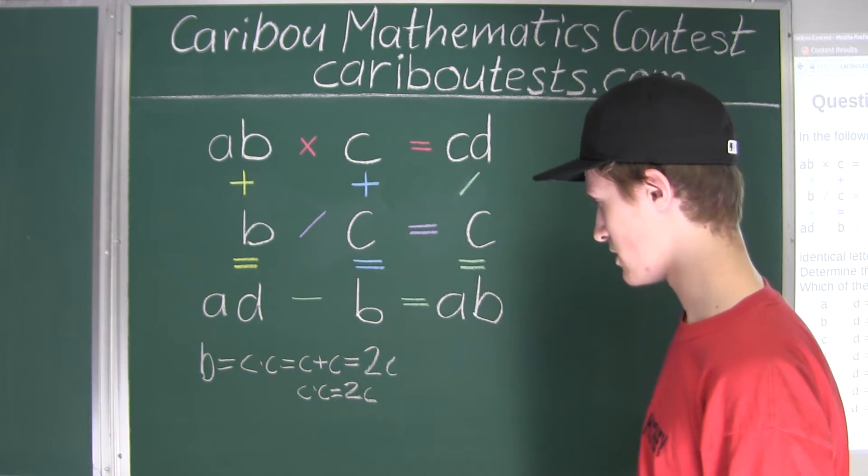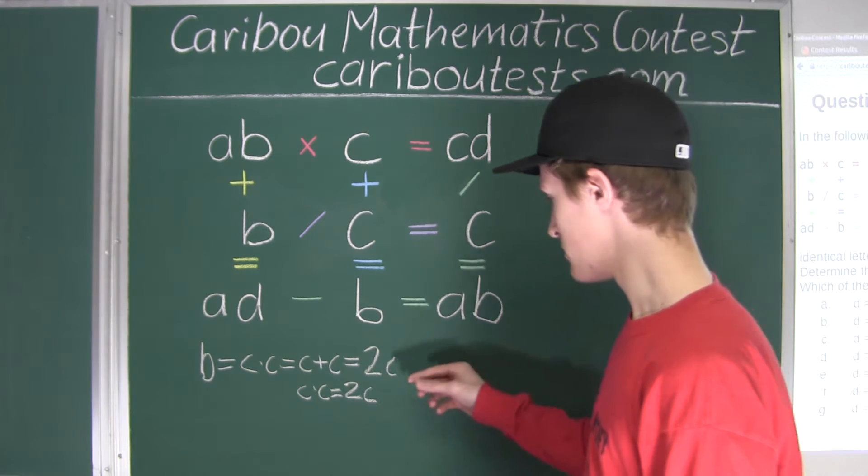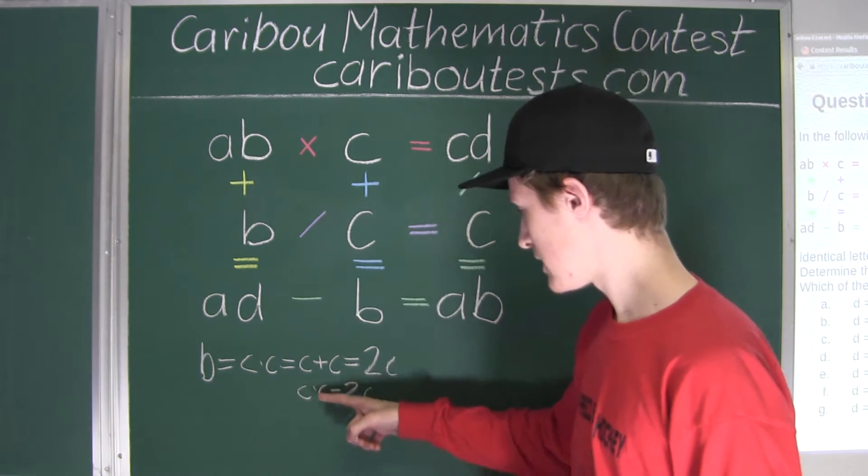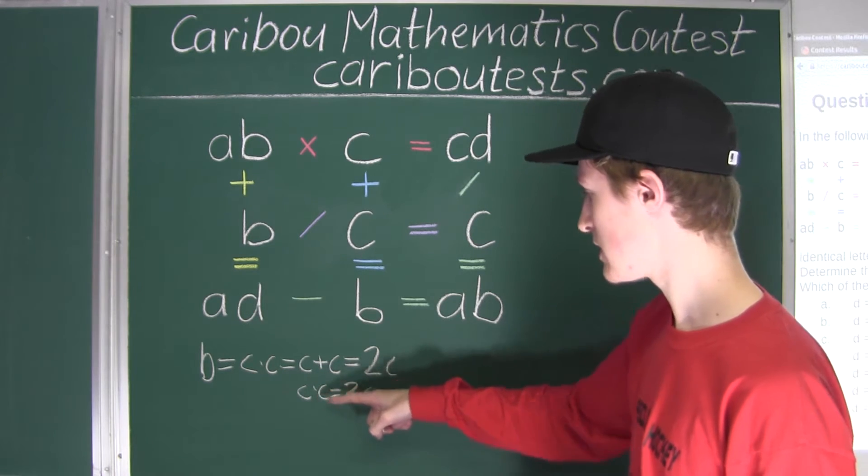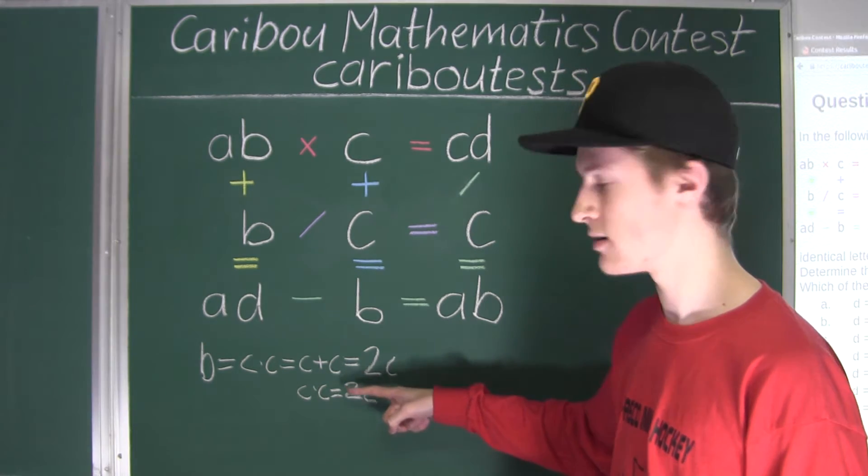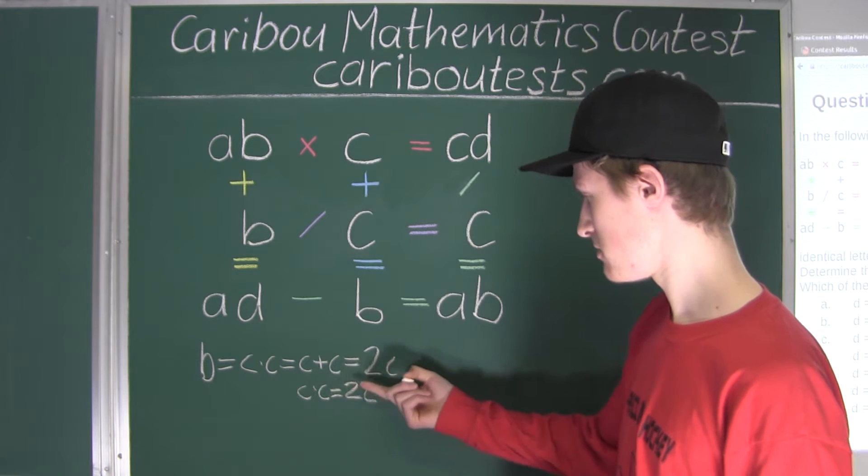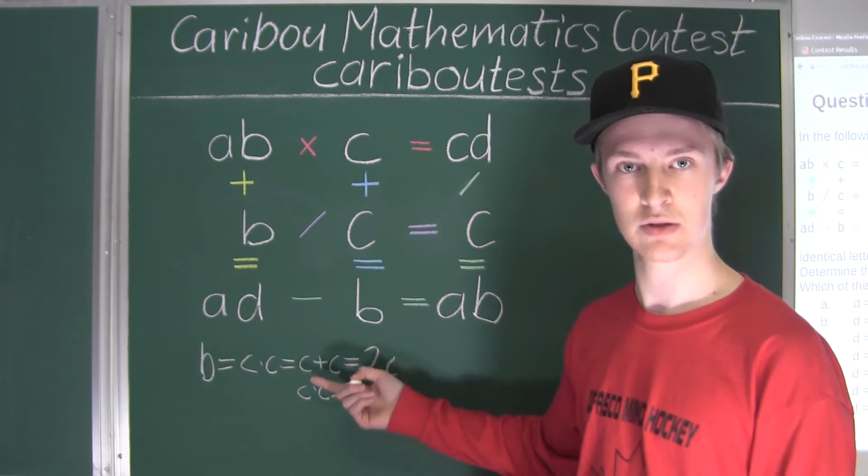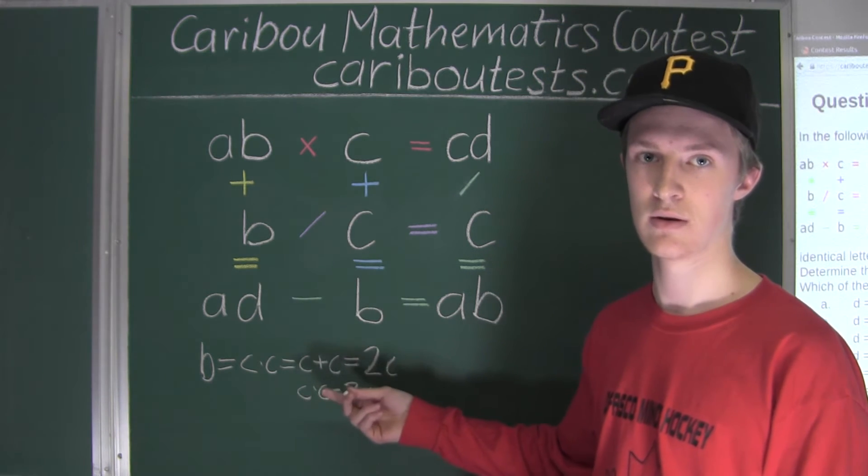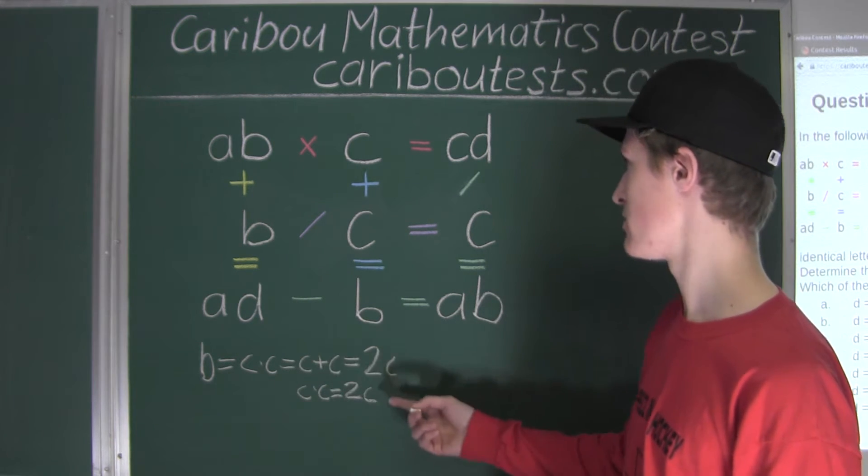So, C could be 0. Now, looking here we have C and C, and then we have times C here on the left side, and times 2 on the right side. Well, so that they are the same value, this C, C must be equal to 2. Well, C can be equal to 2. And we know that it can also be equal to 0.